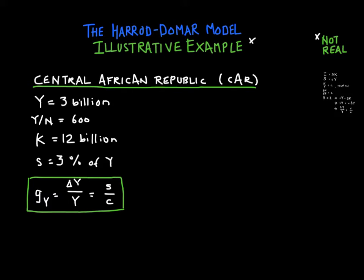Let's just do an example here. Suppose we are looking at the Central African Republic — this is just an illustrative example, not a realistic one. But according to the CIA World Factbook, GDP, or output, is $3 billion. Output per capita, or income per capita, is $600. I'm going to assume that the capital stock is equal to $12 billion. And according to the CIA, the net savings rate is equal to 3% of output.